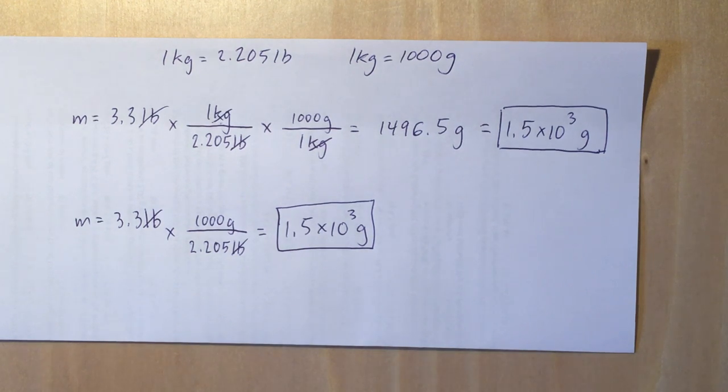And the calculator actually gives us 1496.5 grams, but if we look, the original mass number only had two sig figs, so we got to keep our significant figures the same, so we got to put this into scientific notation at 1.5 times 10 to the third grams.